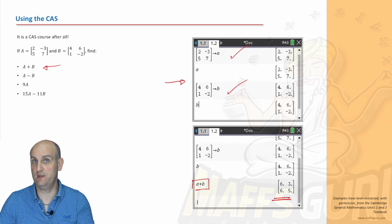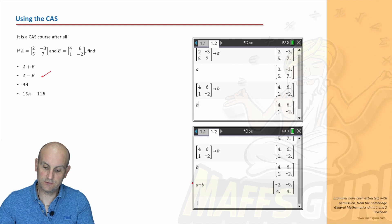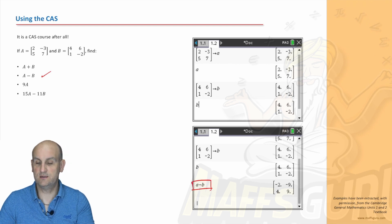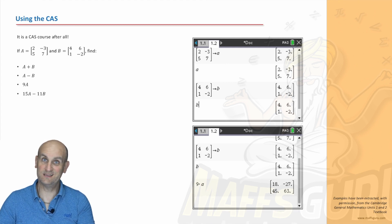So all I did was type in A plus B. And what came out? My answer. Ka-ching. Nice and easy. I didn't have to keep typing in all these matrices, which is a pain. I just defined them and I moved on. So A plus B would be 6, 3, 6, 5. What about A minus B? Let's do that one now. Well, the same. I've just used the same screens, but this time I've just done A minus B. And I've got minus 2, minus 9, 4, and 9.